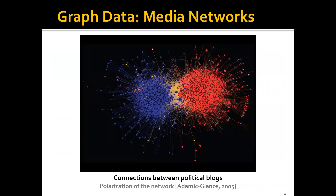Another example is media networks, where, for example, we have a lot of political blogs, and as you can see in the graph, they actually naturally form two clusters. Within each cluster, the blogs are densely connected to each other, but outside each cluster, they're actually much more sparsely connected. These two clusters form two political parties, for example, the Democrats and the Republicans.